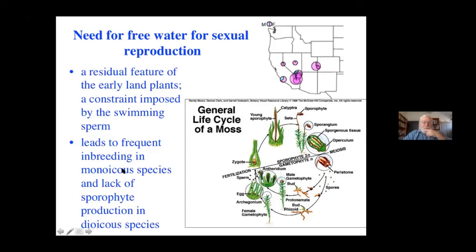We have two different terms we'll be using here: Monoicous and Dioicous — we use these instead of Monoecious and Dioecious because they refer to the haploid plant. There are species of Centrichia that have both sexes on the same individual, and other species that have the sexes on different individuals — those are the Dioicous ones. Monoicous means male and female inflorescences are on the same plant; Dioicous means they're on different plants. That of course has a big effect on their ability to make crosses and sexually reproduce.